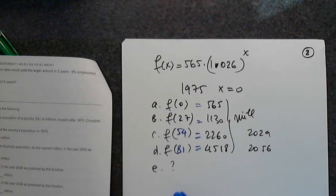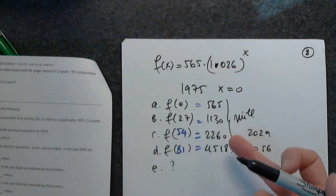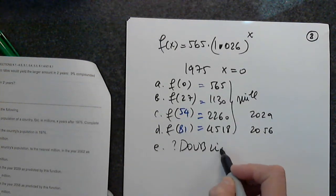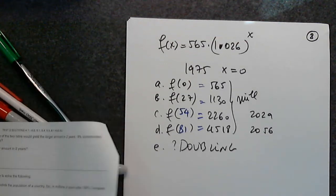Now in part E we are asked to make a comment. What appears to be happening to the country's population every 27 years? 565, 1130, from 1000 to 2000, from 2000 to 4000. It appears that it is doubling. Let's see which one it is. It appears that the population is growing by a factor of 2 every 27 years, or it doubles. Very good. Is this clear? Any questions?